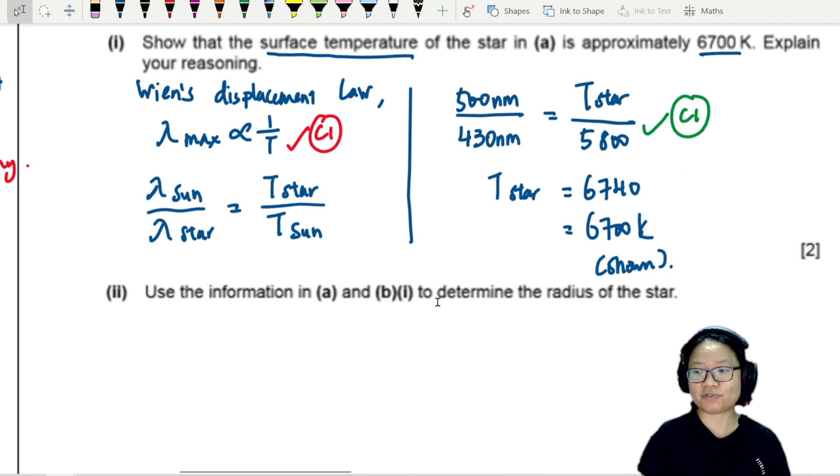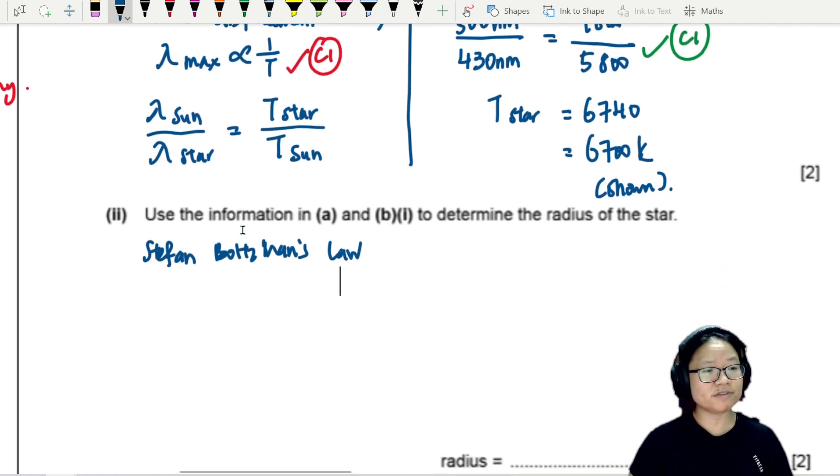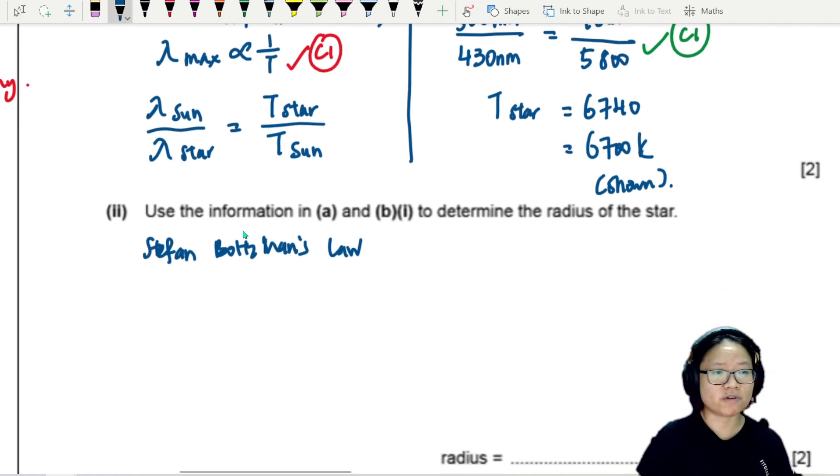Using all the information we have, we are asked to determine the radius of the star. In this case, we need to bring in our good friend Stefan-Boltzmann law. Of course, if you don't know the name, that's fine. You can copy the equation of Stefan-Boltzmann law from the formula sheet. That will be L = 4πσR²T⁴.